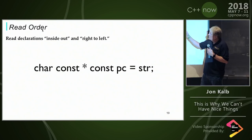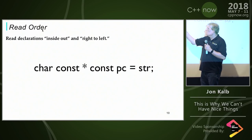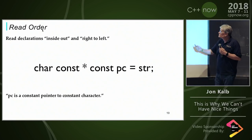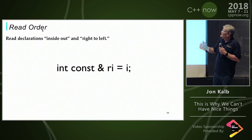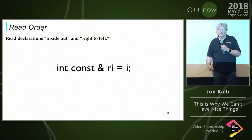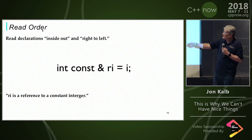And so if you wanted to have a pointer that is a constant pointer to constant char, notice with East const, it reads properly. And then this is a reference to a constant, always reading right to left. And so East const makes these things read properly.